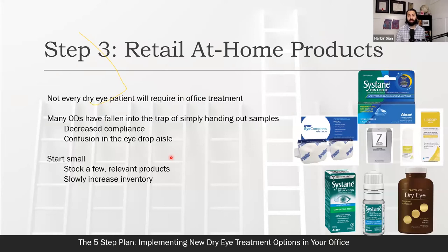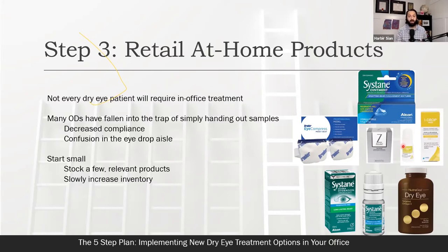My suggestion: if you're able to retail these products in your office, start small. Start with just one or two key eye drops that will help the majority of your patients, maybe one heat mask, one lid wipe. That's exactly how we started — a maximum of five products: two eye drops, one heat mask, one lid wipe, and one omega-3. Now we sell six or seven different eye drops, a couple of heat masks, a couple of wipes. That expands over time as you tailor your selection to the types of dry eye patients you're seeing.